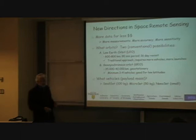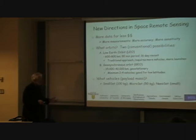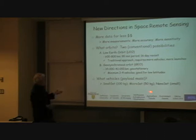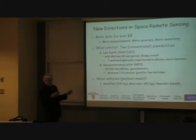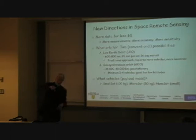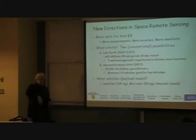A geosynchronous orbit is at about 38,000 kilometers, with an orbital period of 24 hours, so you're standing above a fixed point on the Earth and you can see a lot of the Earth from that point. To get global coverage with geosynchronous orbit, you need at least four vehicles because you have to have some overlap, and you're limited to low latitudes. So those are the orbital constraints.